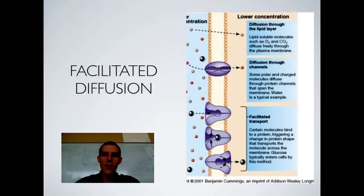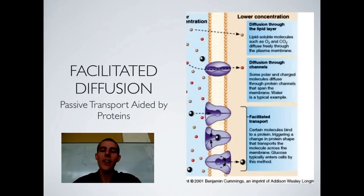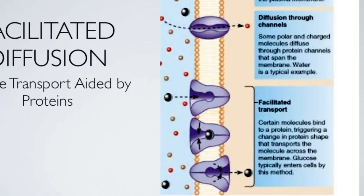In some cases you need to use facilitated diffusion. This is still a type of passive transport because the molecules are moving with the concentration gradient. There are little pores or channels that help things get through. If a molecule is too big to easily diffuse across the cell membrane, it travels through one of those channels or pumps. Molecules are still moving with the gradient, so there is no input of energy. A good example is an aquaporin, which is a tunnel that water molecules flow through since they don't easily diffuse across the cell membrane.